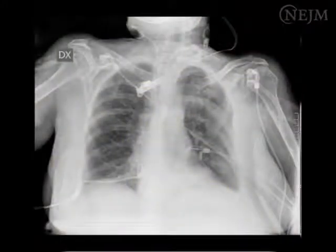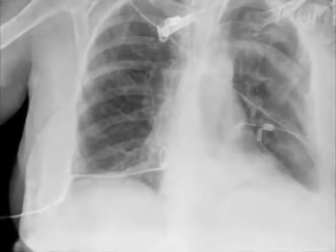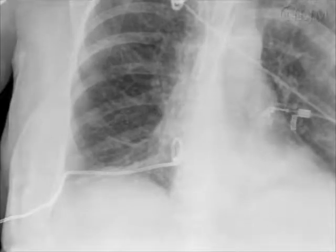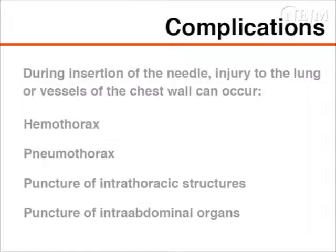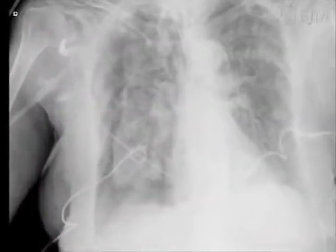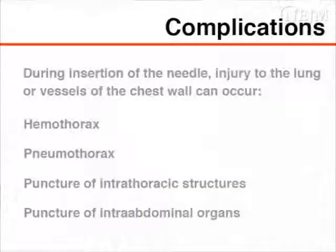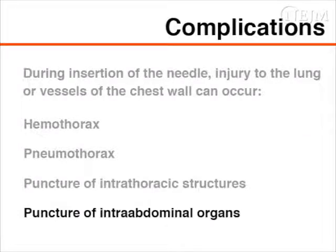A standard chest radiograph should be obtained after completion of the procedure to confirm that the catheter is correctly positioned and to rule out possible complications. Complications of ultrasound-guided insertion of a pigtail catheter are few. However, injury to the lung or the vessels of the chest wall can occur during insertion of the needle. In these situations, a hemothorax or pneumothorax may occur. Other possible complications, also rare, include puncture of intrathoracic structures or intra-abdominal organs.